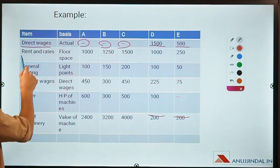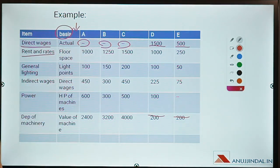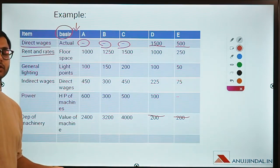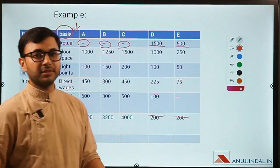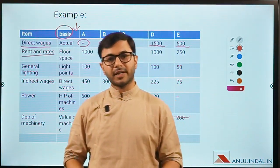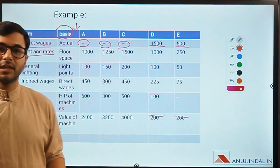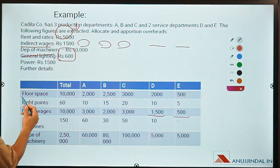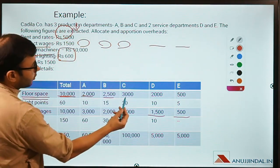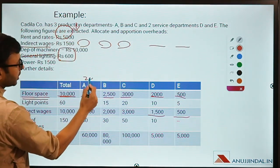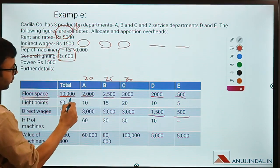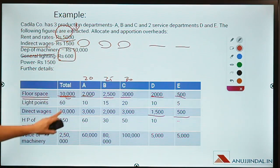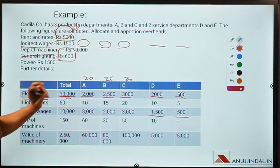Rent and rates — on what basis are you going to distribute rent among departments? Rent is always based on area: the bigger the factory, the more rent you pay. So it will be based on floor space. Looking at the question, floor space total is 10,000. The allocation is 20% for A, 25% for B, 30% for C, 20% for D, and 5% for E. Total rent and rates is 5000, so 20% of 5000 will be 1000 allocated to department A.